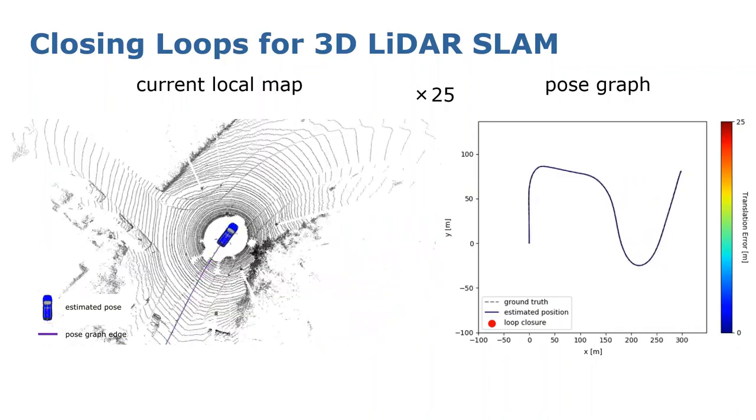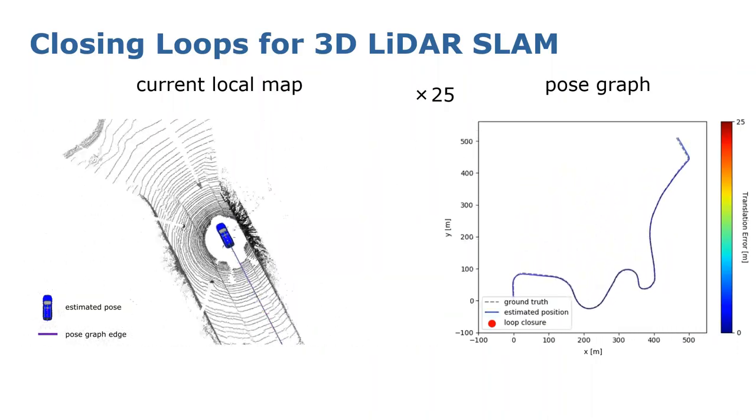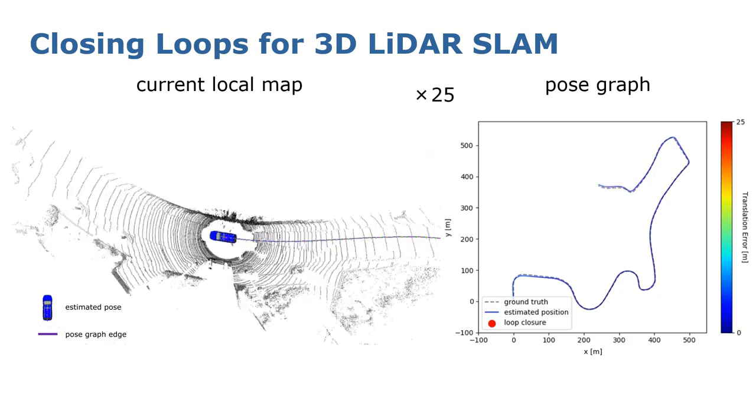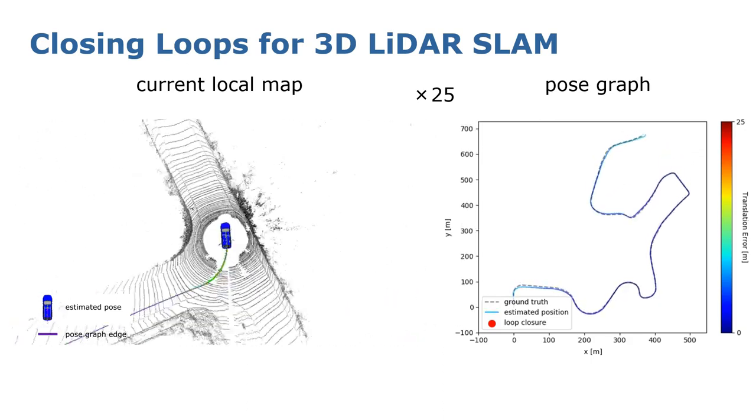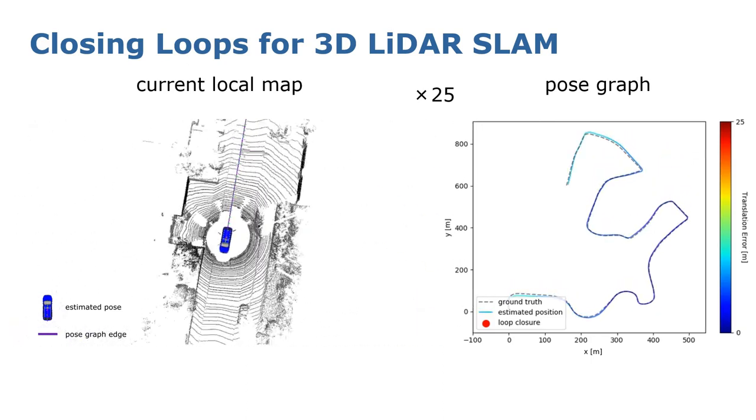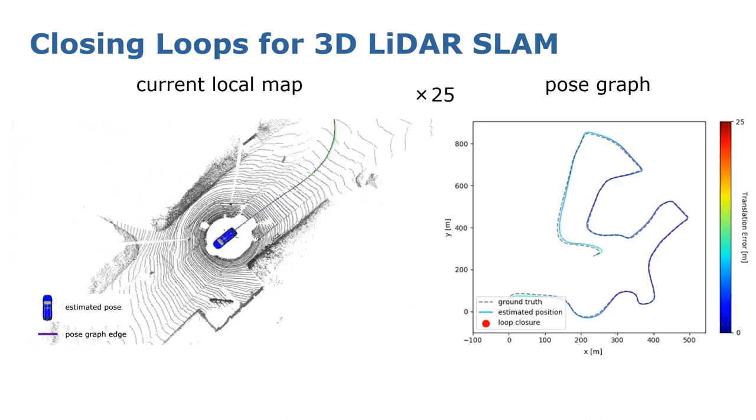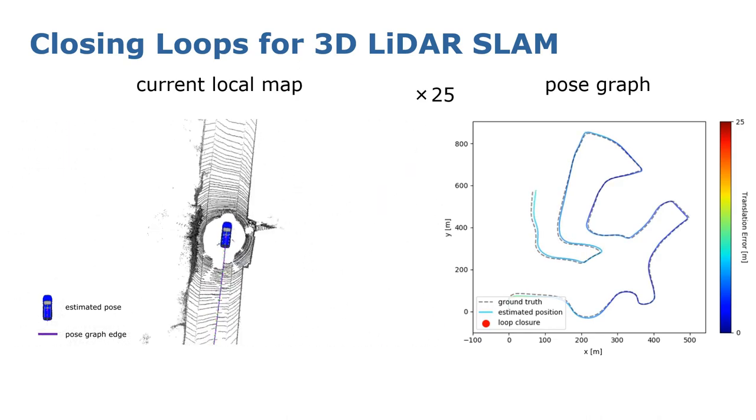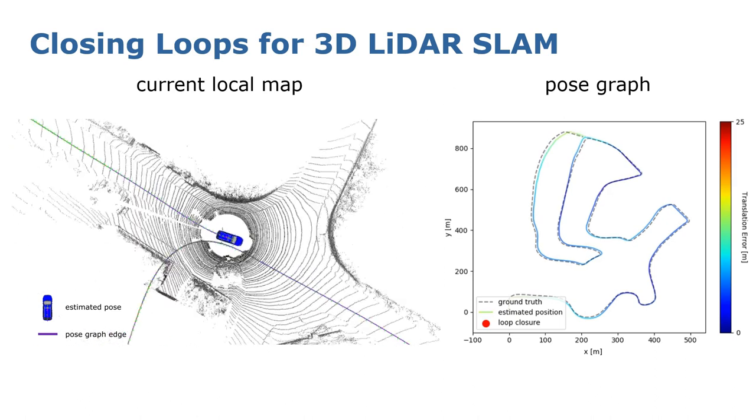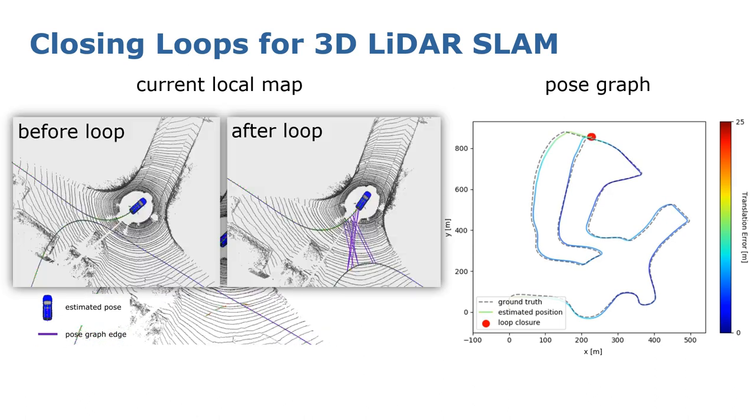Here we show the SLAM results after integrating our OverlapNet into a 3D LiDAR SLAM system. On the left hand side you see the local map of the SLAM. On the right hand side you see the corresponding pose graph. The red dots represent the loop closures found by the approach. Once it finds the loop, the SLAM system can correct the drift and generate a more globally consistent map.